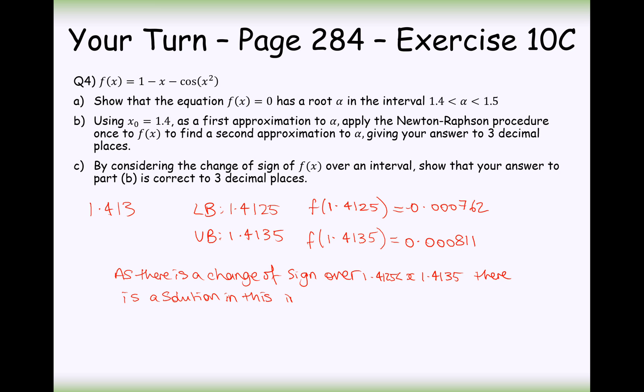And the last thing we need to write for this conclusion here is therefore, the root will round to 1.413 to 3 decimal places. So, there we are. There's our conclusion for that one there. Okay, so that's all we have to do for that section there.